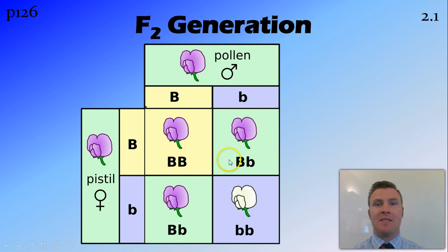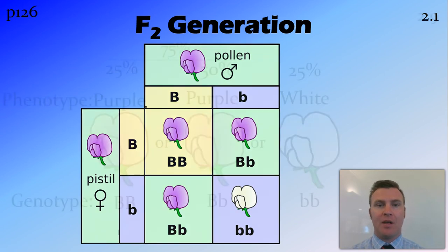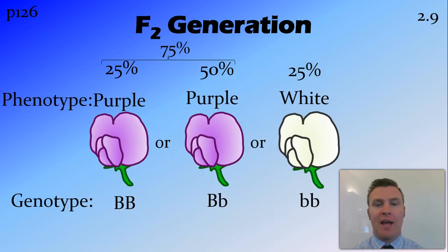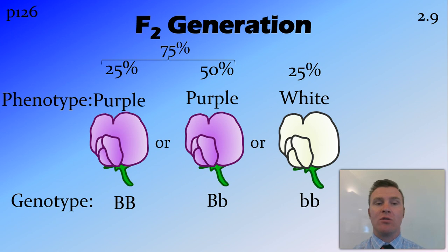Because big B is dominant, three of those four options — or 75% — are going to be purple in their phenotype. To sum up: 25% will be big B, big B — homozygous dominant, phenotype purple. 50% will be big B, little b — heterozygous, phenotype purple. And 25% will be little b, little b — homozygous recessive, phenotype white. So in total we get 75% purple and 25% white.